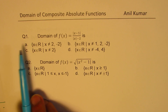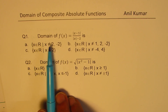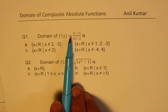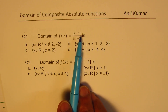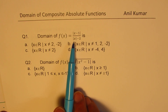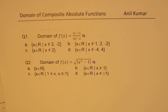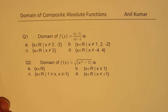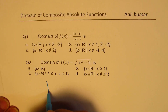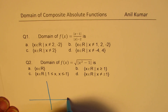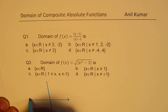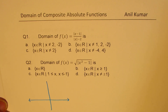Question number one: find the domain of f(x) equals the absolute value of (x minus 1) divided by the absolute value of (x minus 2). You can pause the video, answer these questions, and then look into my suggestions. Let me sketch the absolute function here, which is good for students who have forgotten about it.